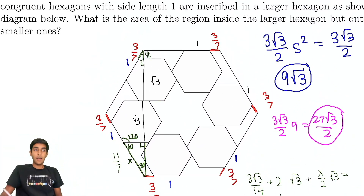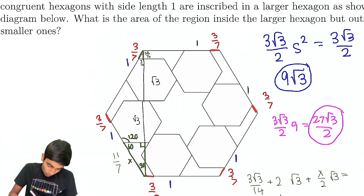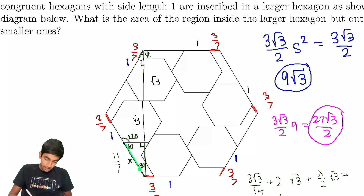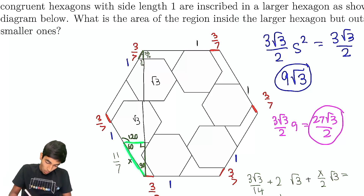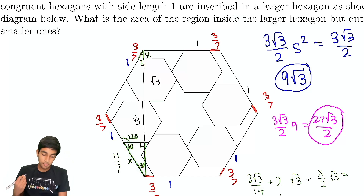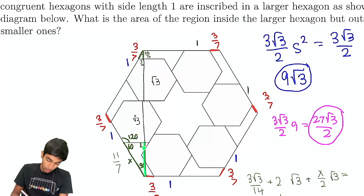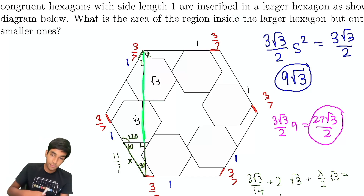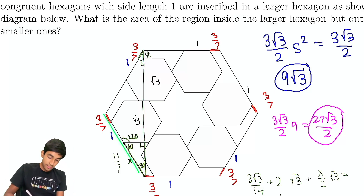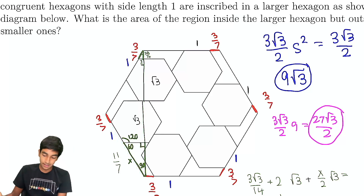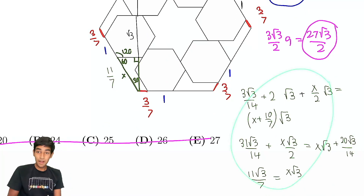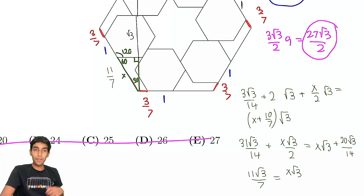The key tricks: realizing we know certain parts of the side length and only need to find the unknown portion x. We drop the altitude to form a 30-60-90 triangle, then find the height rather than the short leg. The heights of the smaller hexagons and the 3/7 gap all add up to the total height, giving a clean equation. A nice, cool problem from the AMC. Hope you enjoyed this video.